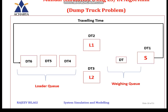There are six trucks: DT1, DT2, DT3, DT4, DT5, and DT6. In the scenario, DT1 has finished its loading and is getting scaled or weighed. DT2 and DT3 are getting loaded by loader 1 (L1) and loader 2 (L2). Another three trucks — DT4, DT5, and DT6 — are waiting to be loaded, forming the loader queue.